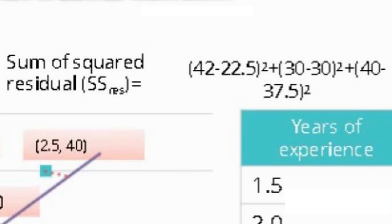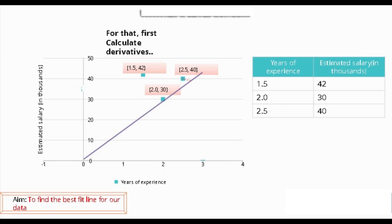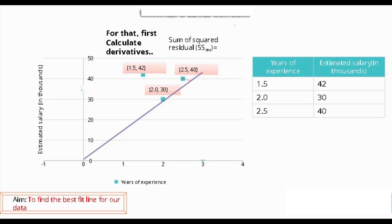Now let's apply this equation to our data. First, calculate the derivative for each residual — the square jumps in front, and the derivative of the rest of the expression is minus 1. Similarly, we take the derivative for the rest of the equation.